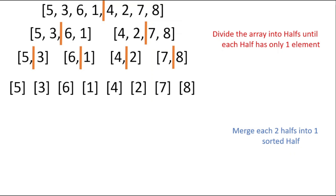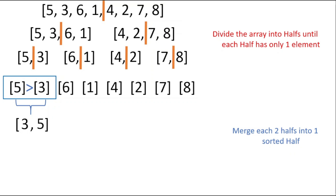Now we start the second step, which is to merge each two halves into one sorted half. We start by taking the first two halves and merging them. To do this, we compare the two elements and add the minimum element first. In this case three is less, so we add it first, then we add five.